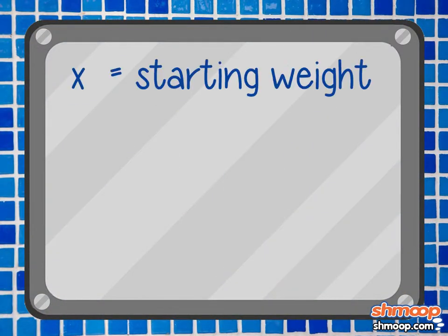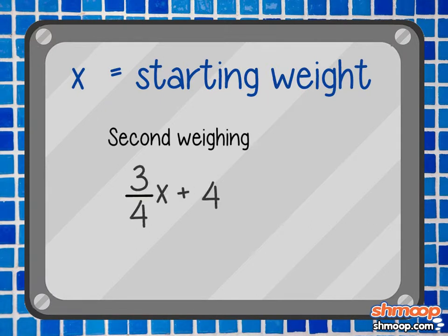Okay, well let's have x equal Pudgy's starting weight. In that case, the reading on the scale at her second weighing would be three-fourths x plus four.